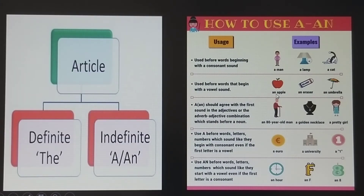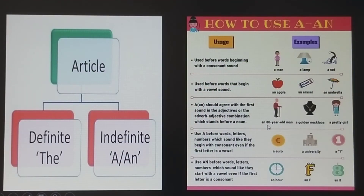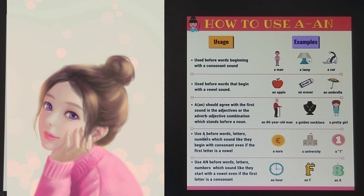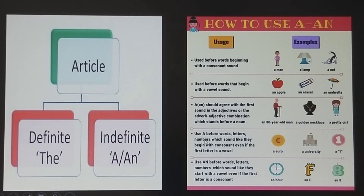When a vowel sound comes, the article 'an' comes in front of it. 'A' and 'an' should agree with the first sound in the adjective or the adjective combination which stands before a noun. For example, 'an 80 years old man' — here 'E' is a vowel sound, so 'an' comes. A gold necklace. A pretty girl. Use 'a' before words, letters, or numbers which sound like they begin with a consonant even if the first letter is a vowel.